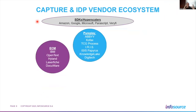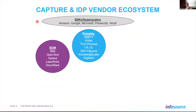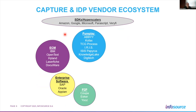The pure-play capture vendors and ECM vendors are probably what most people are familiar with — a lot of crossover between the two. OpenText operates as both a pure-play capture and ECM vendor. Market leaders like ABBYY and Kofax still control the majority of the market. Tangentially, you've always had enterprise software and more specialized P2P players specializing in invoice automation that have traditional capture but are now launching IDP applications.